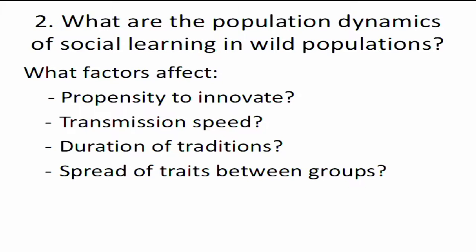What are the population dynamics of social learning in wild populations? What factors affect propensity to innovate, transmission speed, duration of traditions, and spread of traits between groups? To answer these questions, we need longitudinal data on groups documenting the spread of traits over time, preferably from the moment of innovation until extinction, and information about the characteristics of individuals and the ecological factors influencing choice of behaviors. We have quite sparse data for answering these questions currently, but I think the situation will improve now that more researchers are working on them.